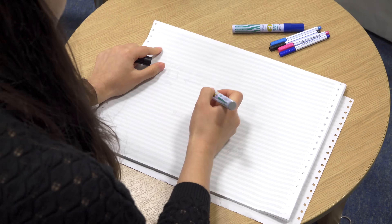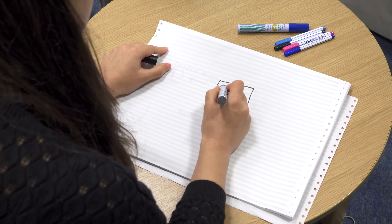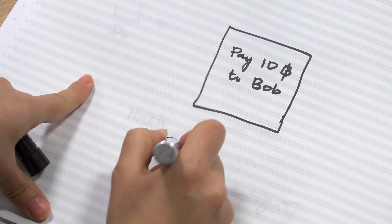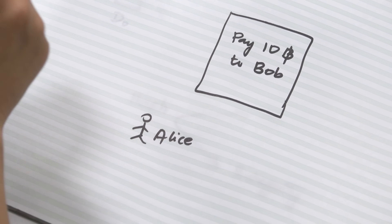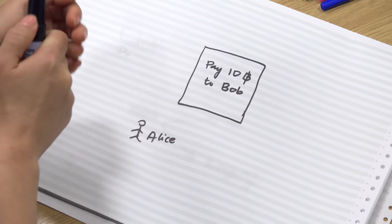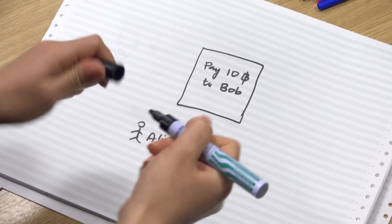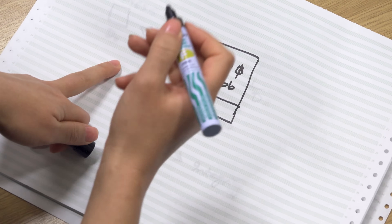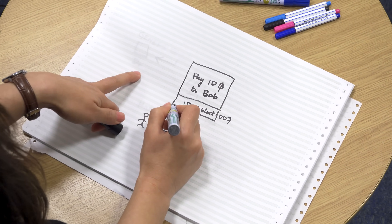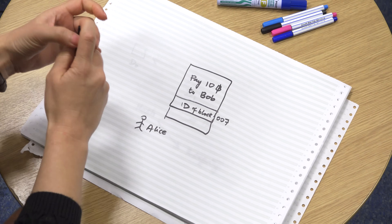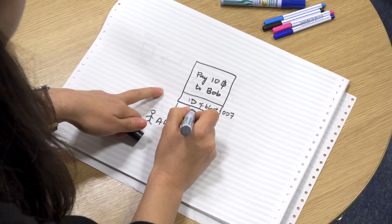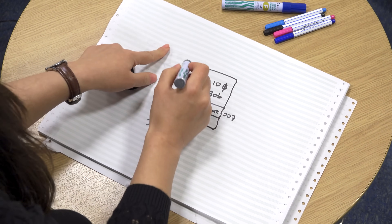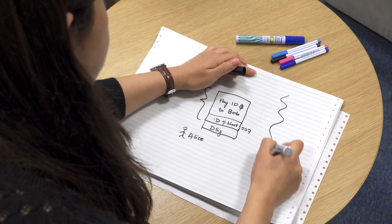What is a transaction? A transaction is an operation that changes the state of data on the blockchain. For example, a transaction might look like: pay 10 bitcoins to Bob, generated by Alice. Alice has two things to prove: first, that she owns these 10 bitcoins, providing the ID of the block where she became the owner — say block 007. Second, that it's actually Alice generating the transaction and not someone pretending to be her. For this she uses a cryptographic primitive called a digital signature, signing the transaction with her private key.